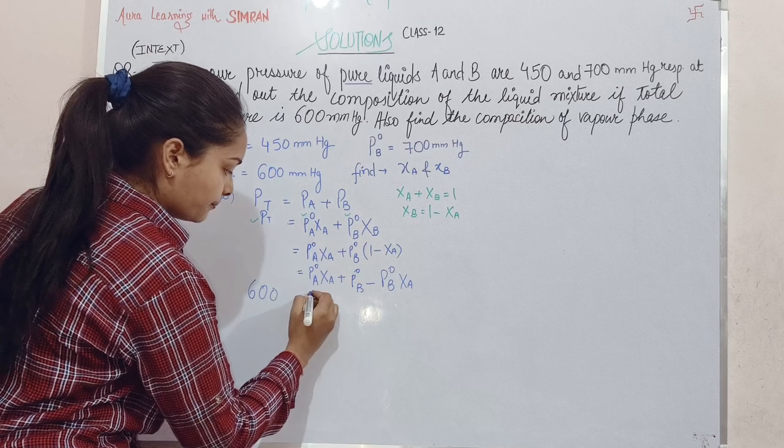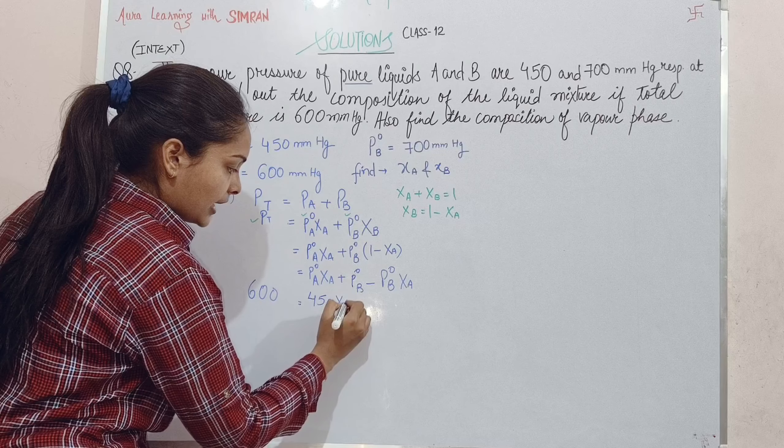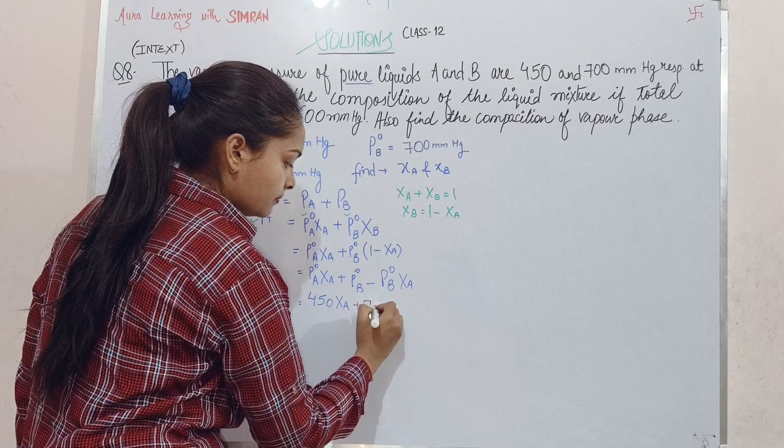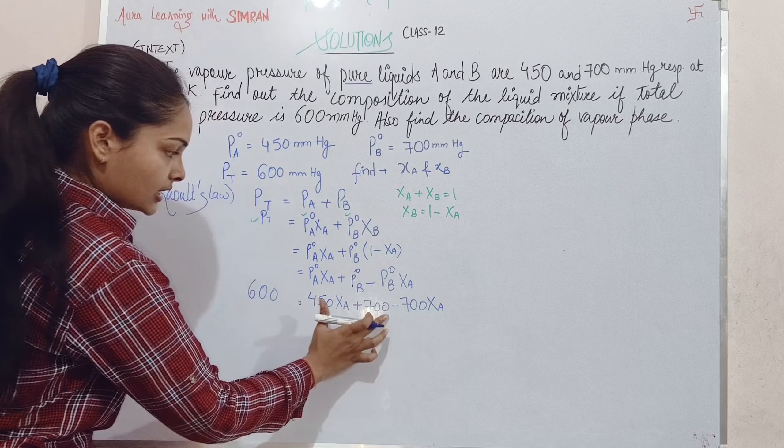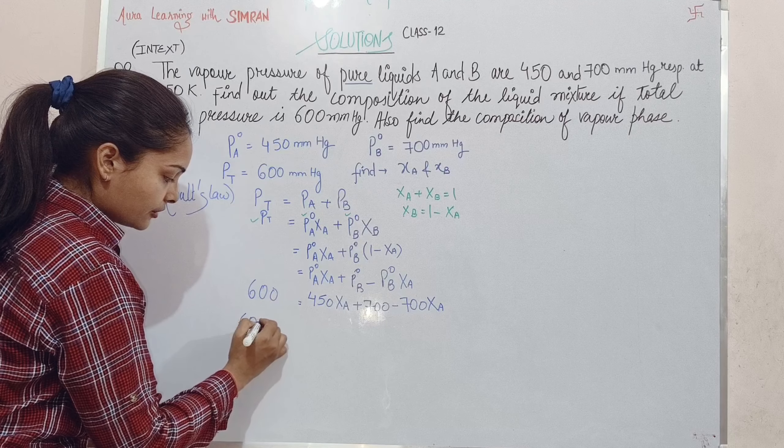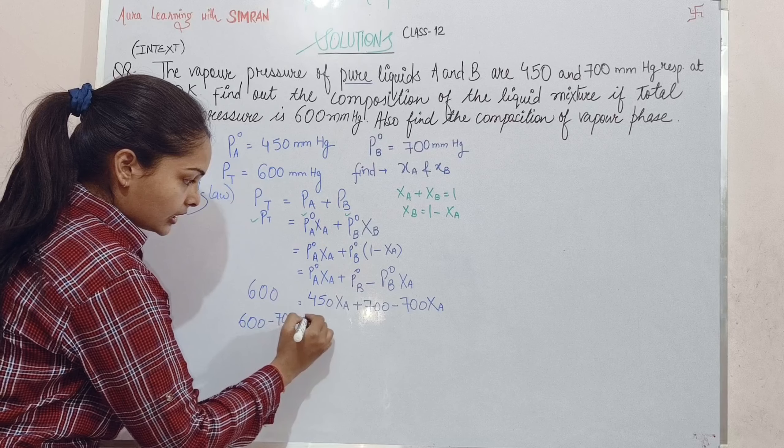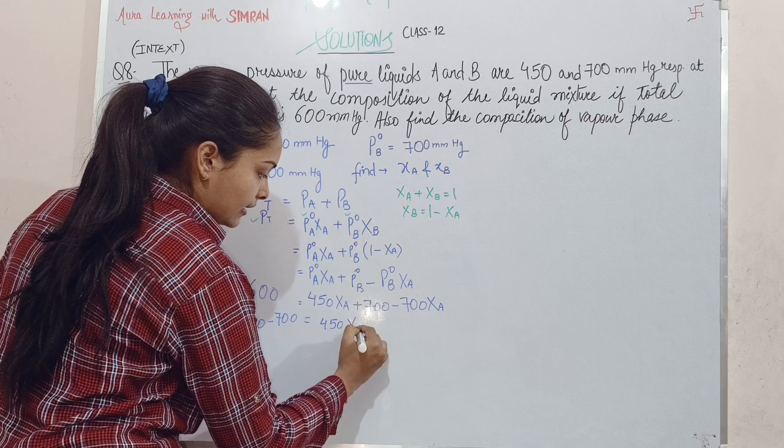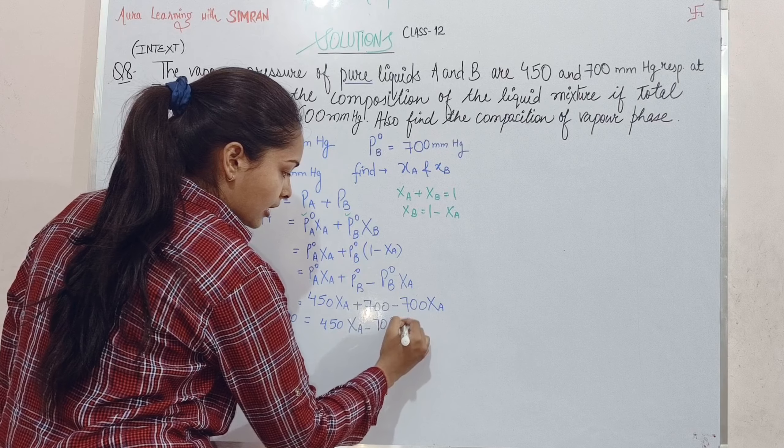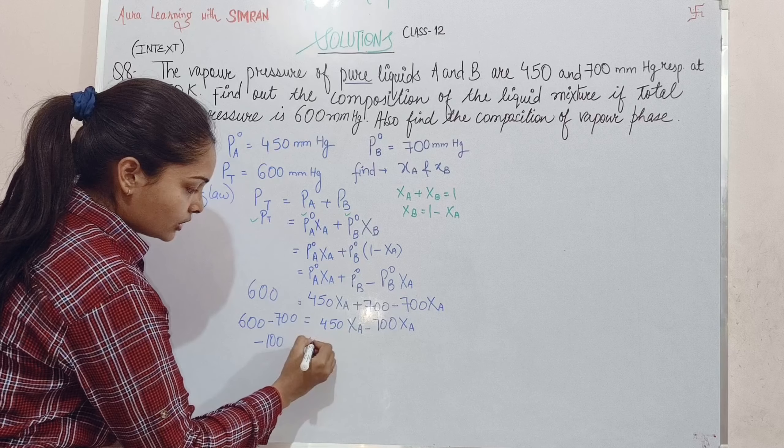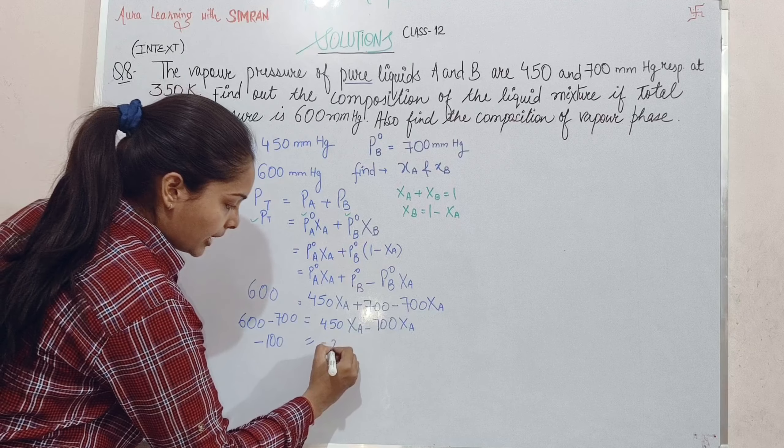600 equals 450·χA plus 700 minus 700·χA. This simplifies to 600 equals 700 minus 250·χA.